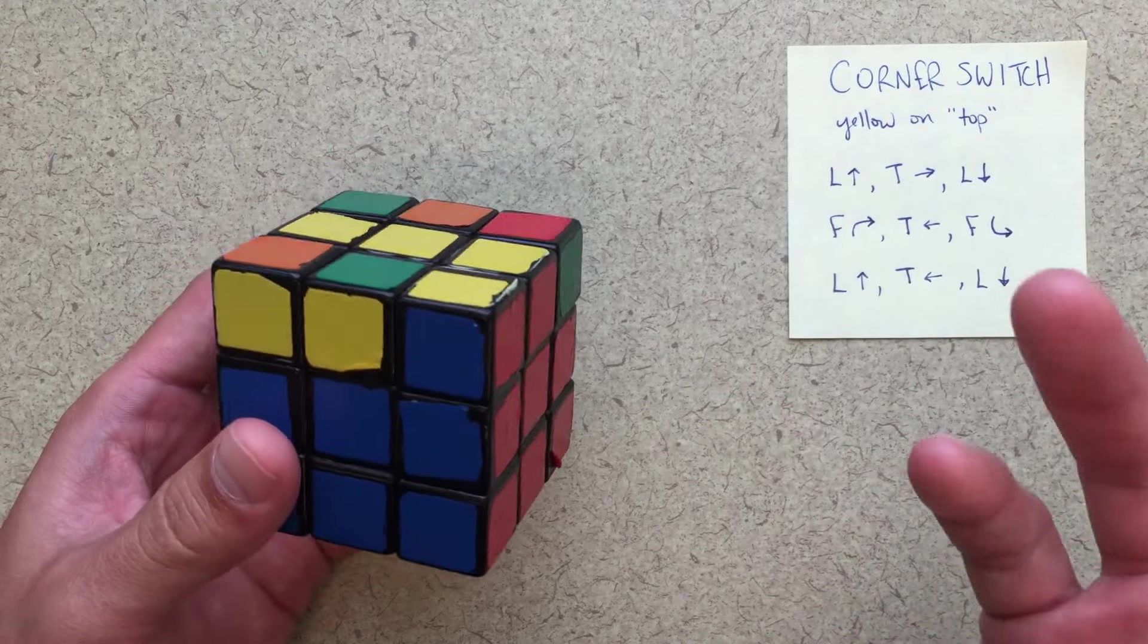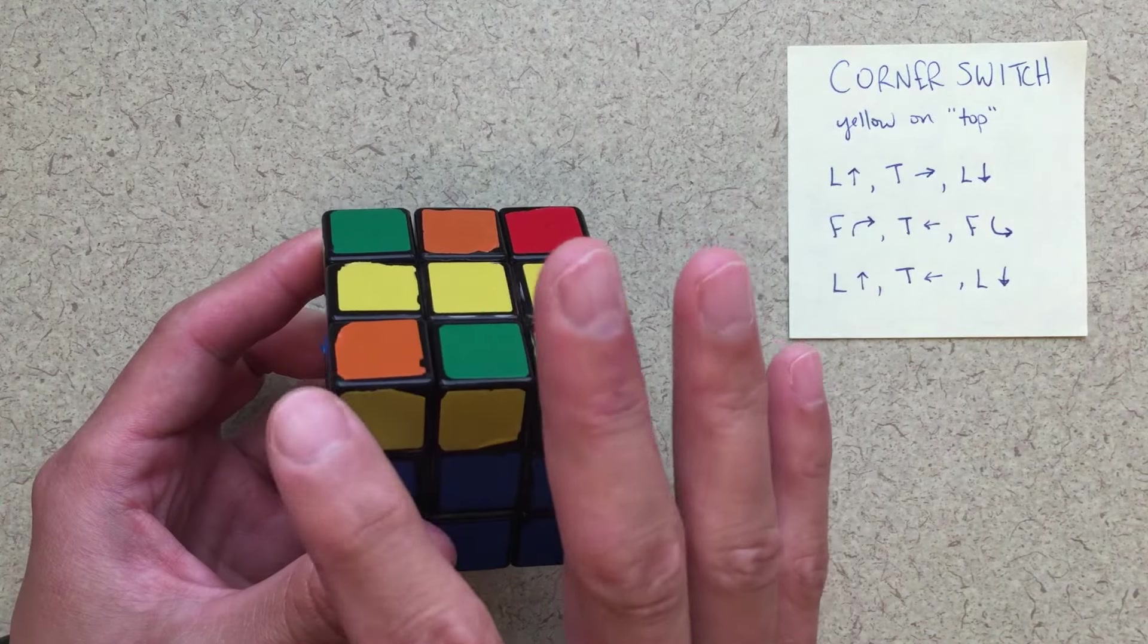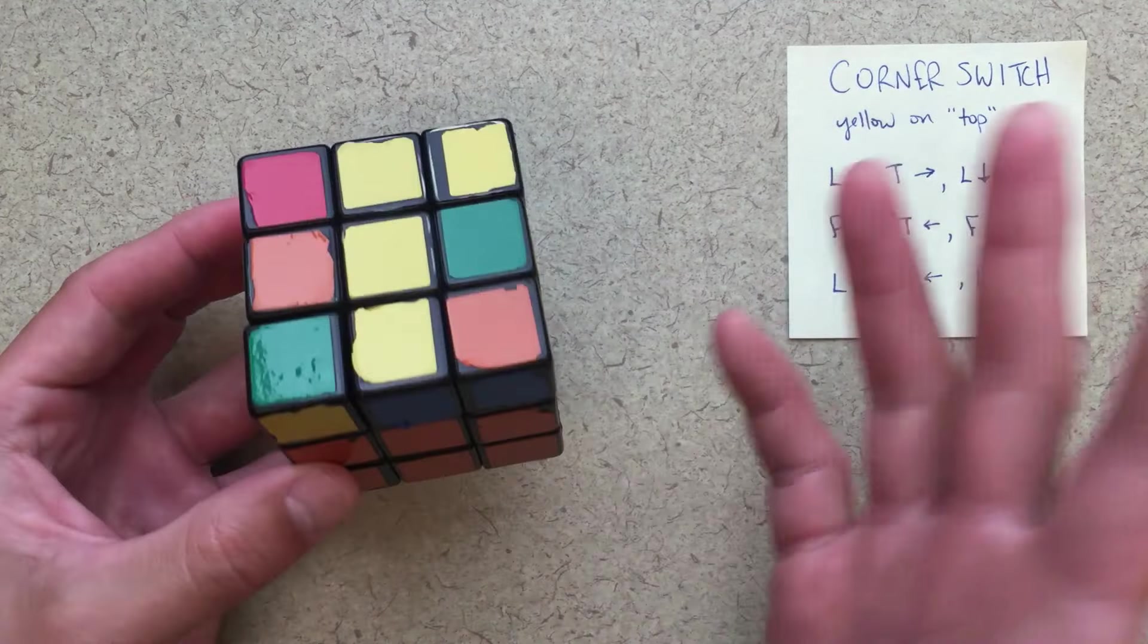Sometimes you'll see them. They'll all be correct. Sometimes they won't. It doesn't matter. Just that they're in the correct spots. And that's it for the corner switcher.